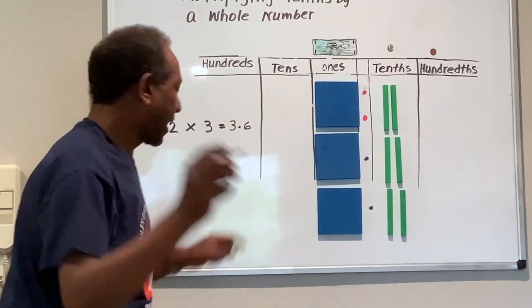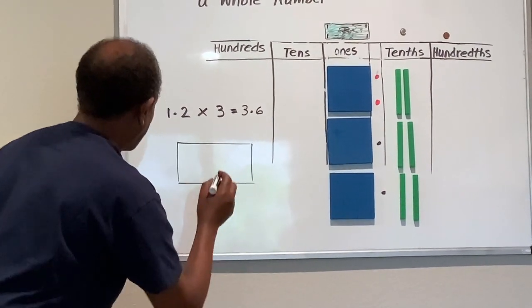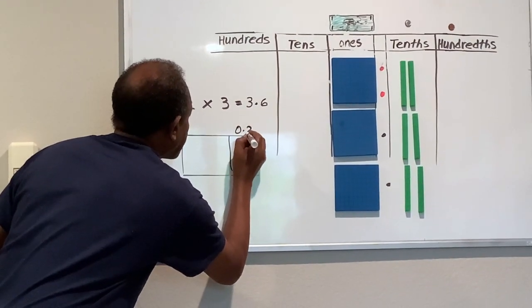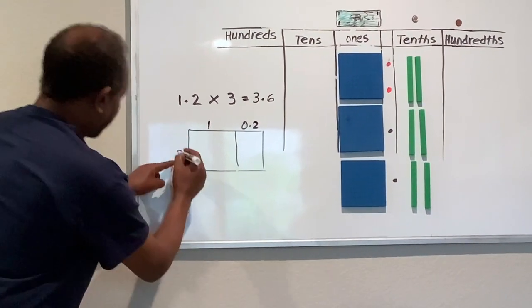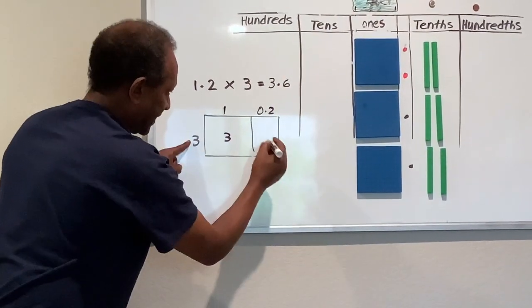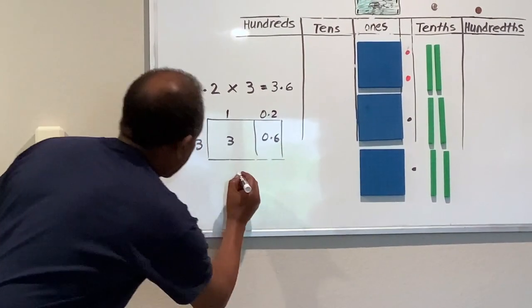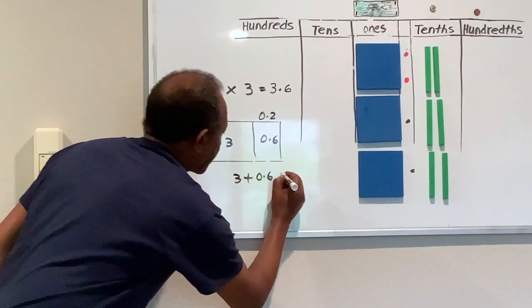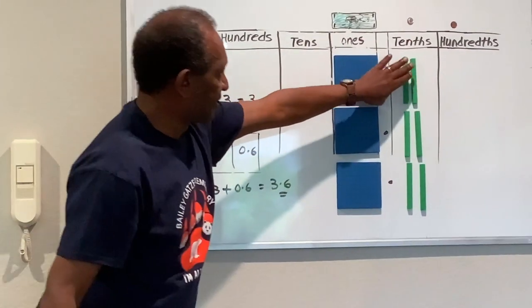I'm going to draw an area model to show it to you. This is one whole and this is two-tenths, both multiplied by three. Three times one whole is three. Three times two-tenths is six-tenths. So together: three and six-tenths.